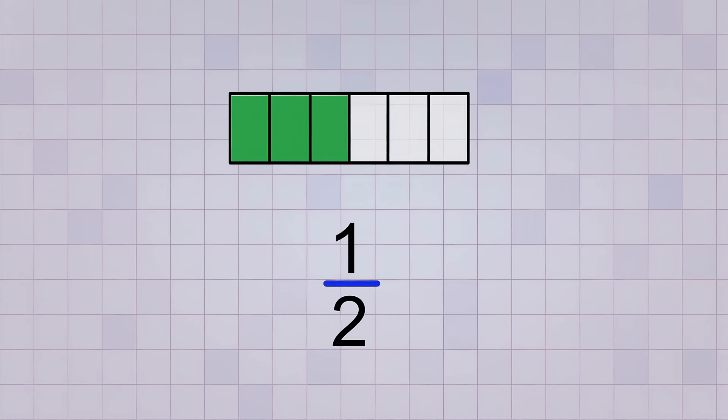The amount of our rectangle that's shaded is still the same, but now the numbers for our fraction are 3 over 6. The numbers are bigger because our rectangle is now divided into more parts. The fraction we have now, 3 over 6, is equivalent to our original fraction, 1 over 2. That means they have the same value. They represent the same amount.